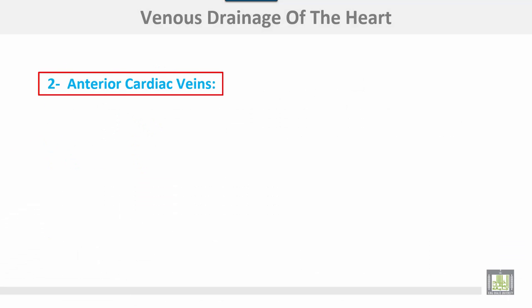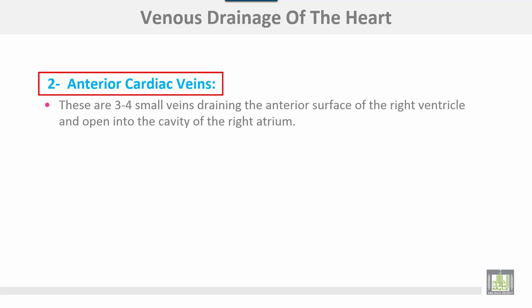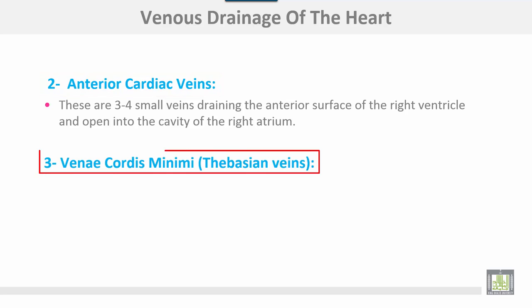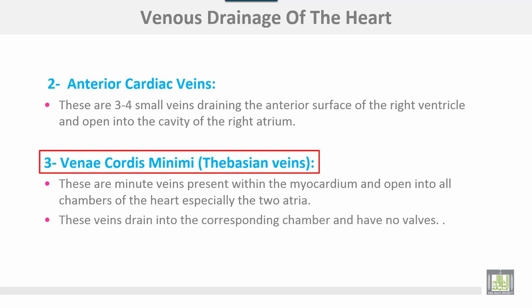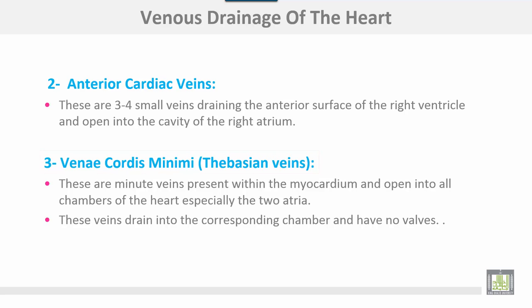The anterior cardiac veins are about three or four small veins draining the anterior surface of the right ventricle and opening into the concavity of the right atrium. The venae cordis minimae or Thebesian veins are minute veins present within the myocardium, opening into all chambers of the heart, especially the two atria. These veins drain into the corresponding chamber and have no valves.